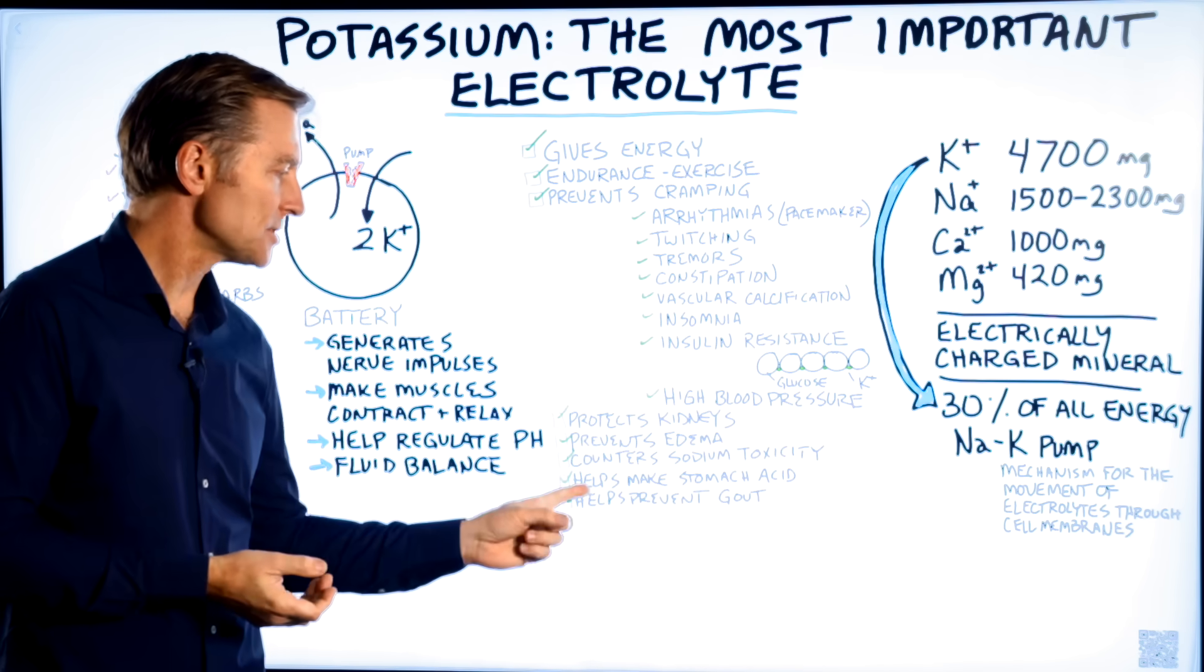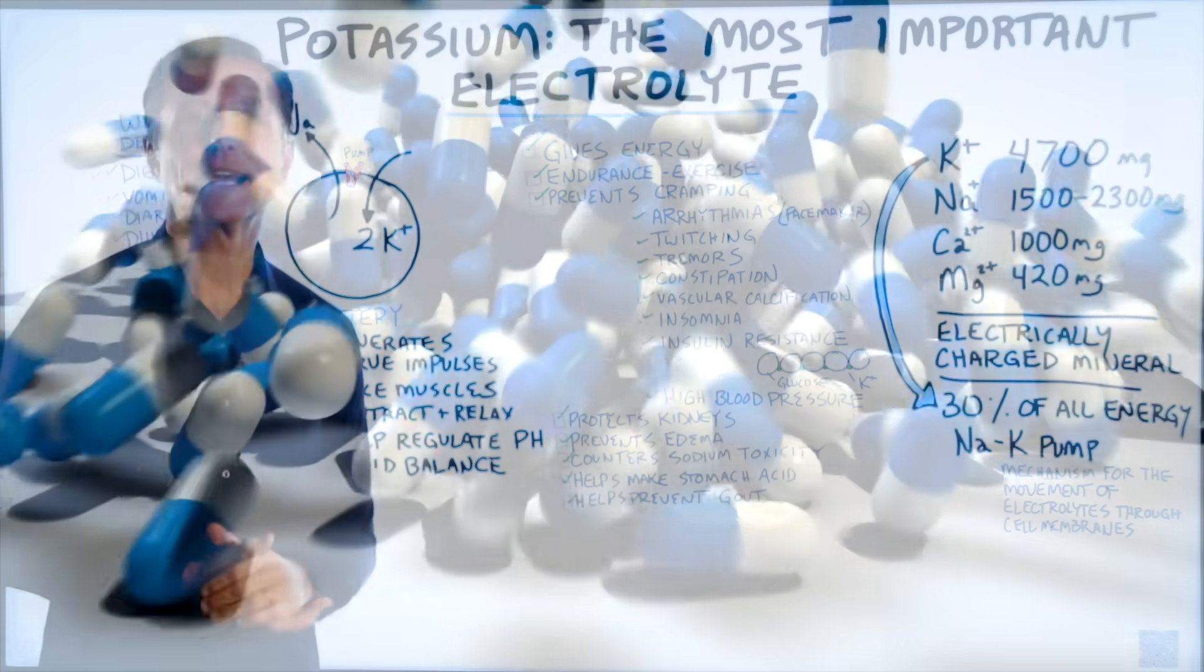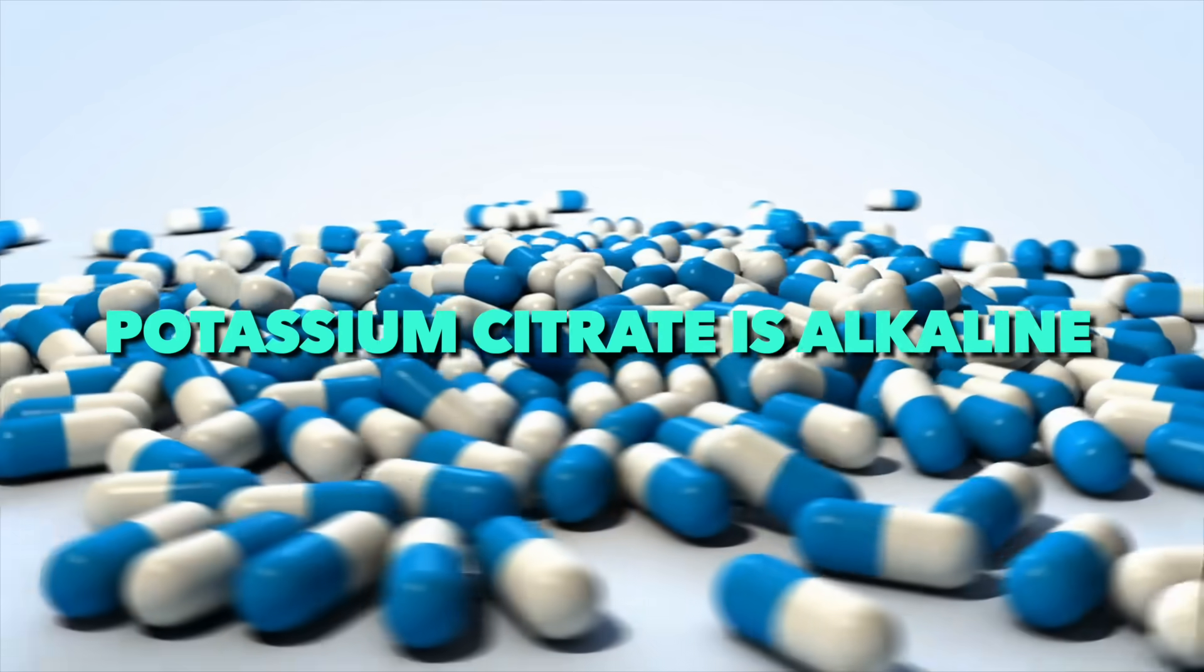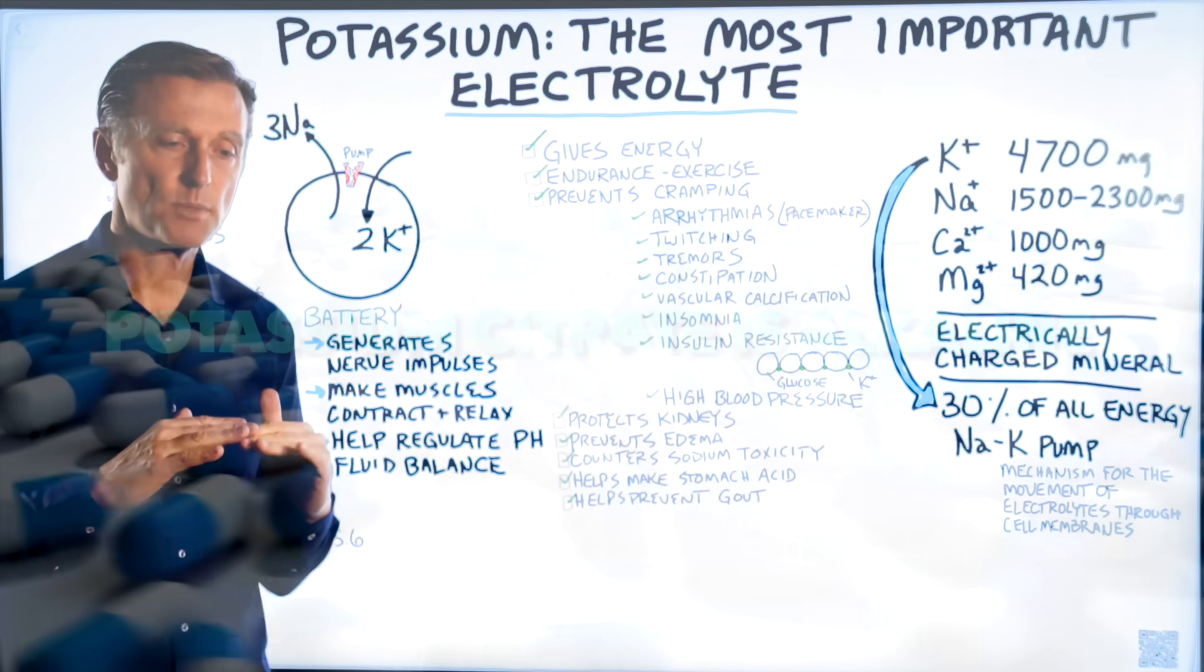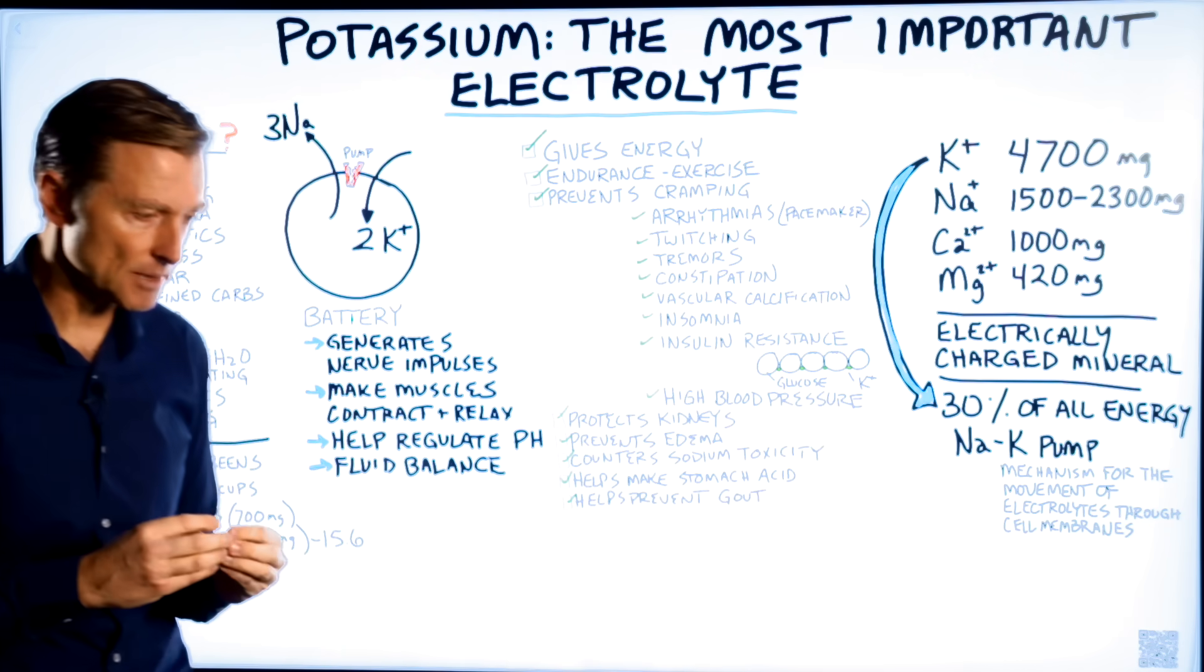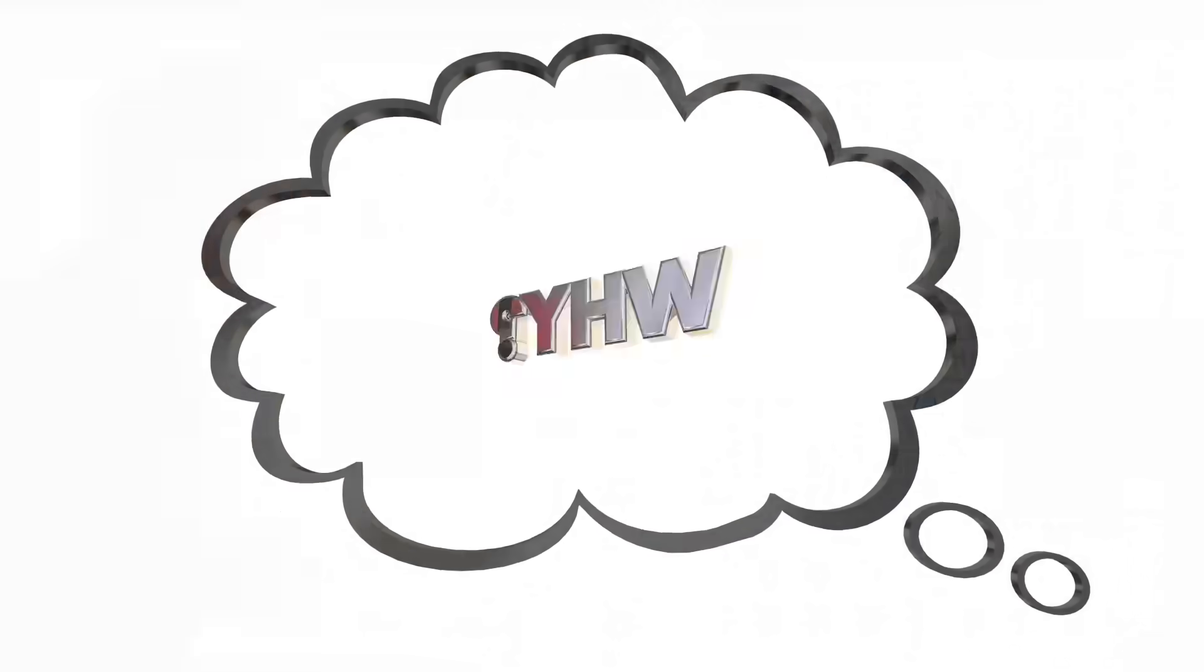I already mentioned this. Potassium counters sodium toxicity. Also, I already mentioned that it helps you make stomach acid. And I also mentioned it helps prevent gout because potassium citrate is alkaline. And if you keep the pH correct and don't allow your pH to become too acidic, you won't have these uric acid crystals coming out of solution, aggravating your big toe joint.